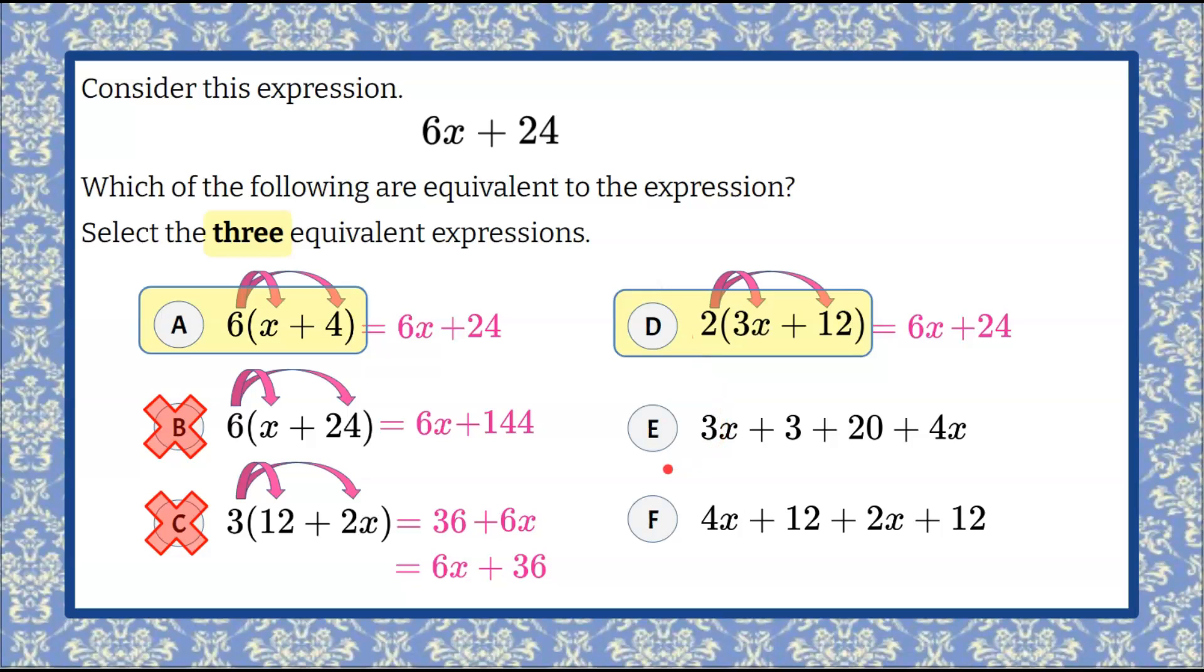Looking at E. We don't have parentheses. We're not distributing here. But I can identify that we have like terms. So we have a term of 3x, positive 3, positive 20, and positive 4x. We combine 3x and 4x because they both have the variable x to get 7x. 3 plus 20 is 23. 7x plus 23 is not equivalent to 6x plus 24. We can eliminate answer choice E.